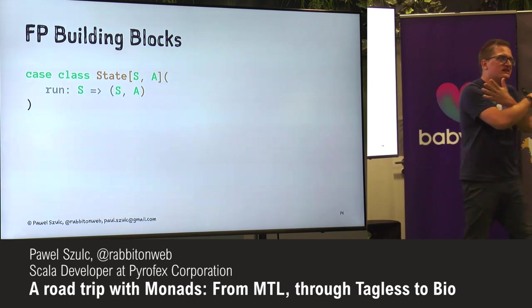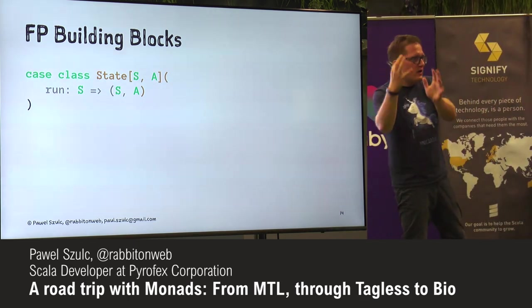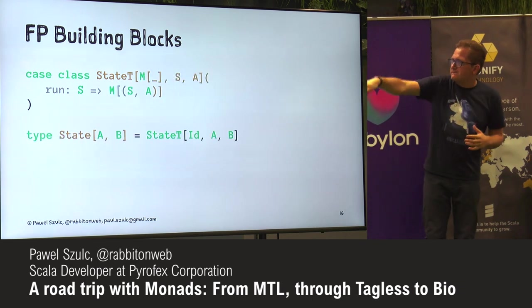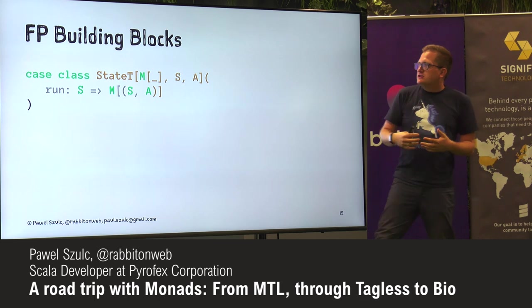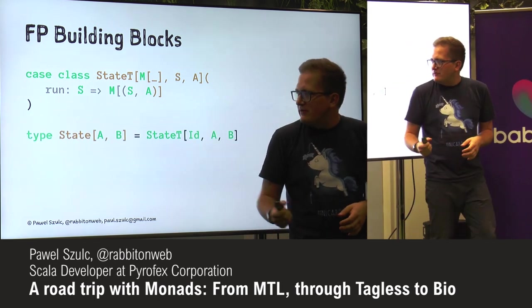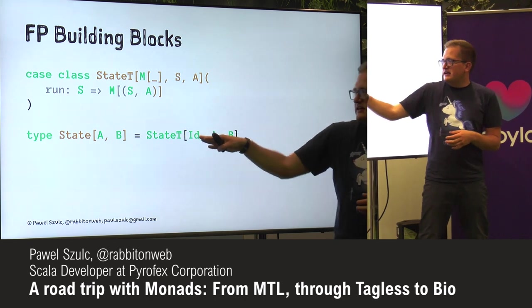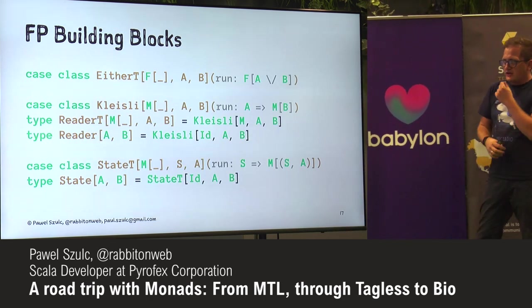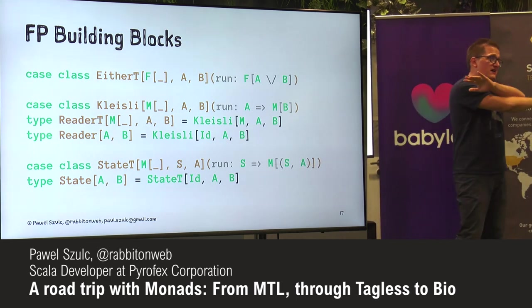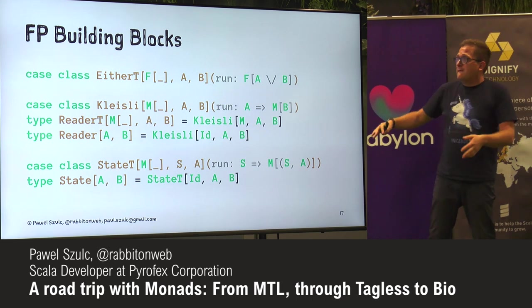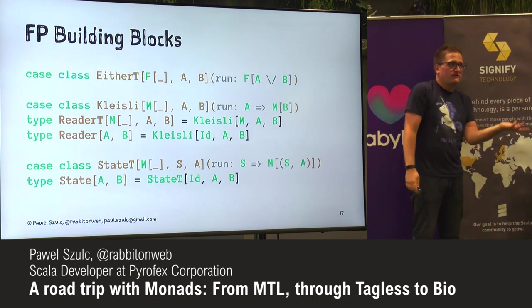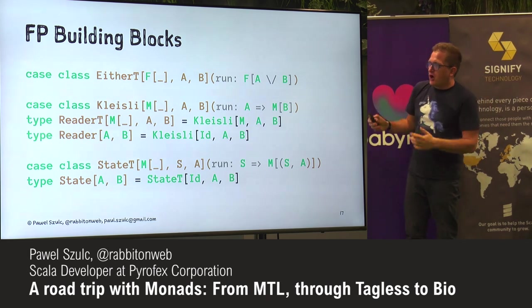The same thing goes for State. State is just a function that goes from some S to a tuple — a new S and some A being produced. StateT is one more specialization: instead of going from S to (S, A), we go from S to (S, A) closed over some M. And one more time, we can define State using StateT and the ID. Those are the building blocks you learn when you start learning about functional programming in Scala — and as I said, if you haven't seen them before you will be confused, but there's nothing really magical about it.